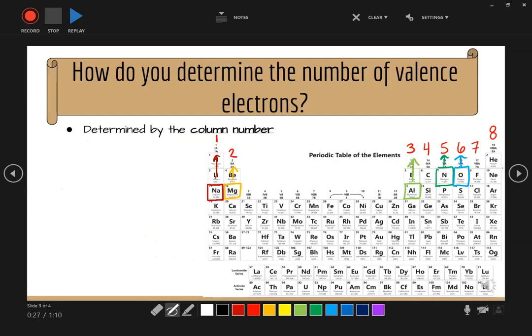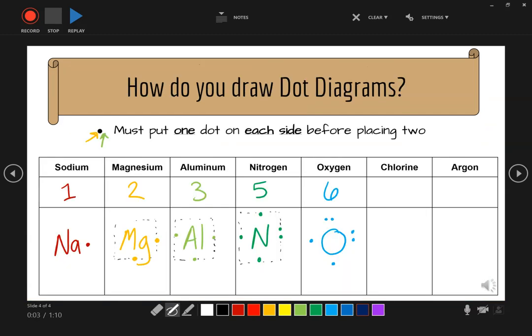All right. Let's try chlorine. Find chlorine on the periodic table. So it has seven valence electrons. Draw the symbol for chlorine, which is Cl. And we're going to place seven dots. So one, two, three, four, five, six, seven.